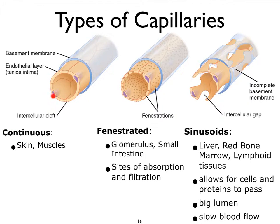Continuous capillaries are made up of a simple squamous epithelial layer called the endothelial layer, part of the tunica intima, sitting on some basement membrane. In between the squamous cells, we have what we call intercellular clefts, through which some small particles can possibly move. Not all molecules are going to be able to make it through the cell membrane; some particles will take advantage of passing between the cells, though that might be quite difficult. Not every particle, molecule, or ion is going to be able to do that.